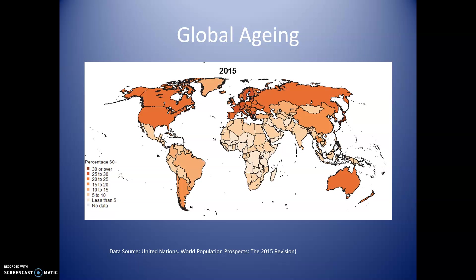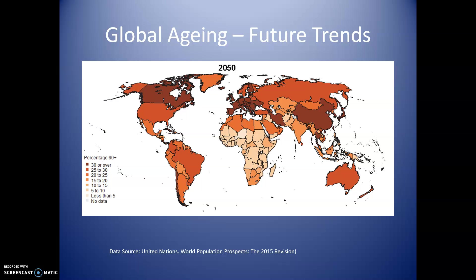Moving to 2015, you notice everything is getting darker, meaning a greater percentage of the population in all countries is 60 and over. On top of that, take a look at parts of Southeast Asia and Central and South America where the colors are darkening as well. Now fast-forwarding to 2050 — a predicted map — our North American and European countries have got even darker, but look at China, South America, and Southeast Asia. We see that aging is a global phenomenon affecting all countries of the world, though at different rates, and this has real implications on health and healthcare policy.